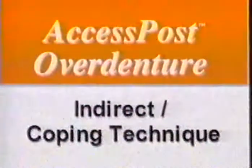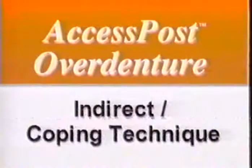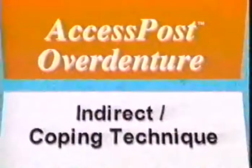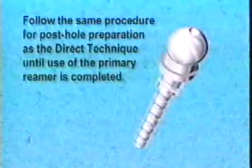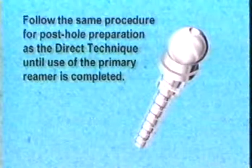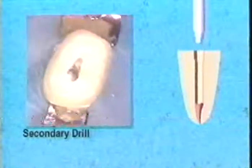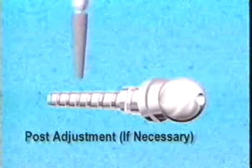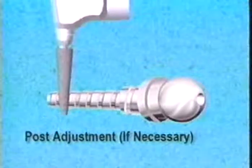The Access Post Overdenture may also be used in the indirect coping technique, in addition to the previously described direct non-coping technique. Follow the same procedure for post hole preparation as the direct technique until use of the primary reamer is completed. The secondary drill is used in the indirect technique to create the second-tier preparation in the coronal post hole. An approximate 0.25 millimeter space is needed between the flange of the post and the coronal root structure to allow for coping placement. Place the post into the prepared post hole, shortening the apical end if necessary to ensure a full seat.